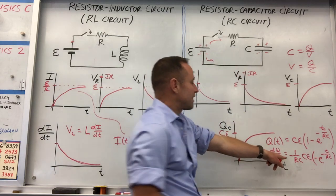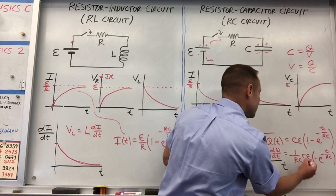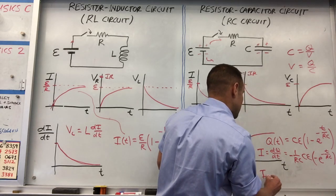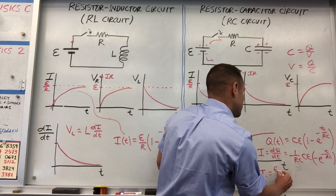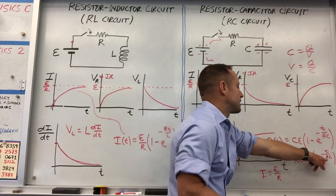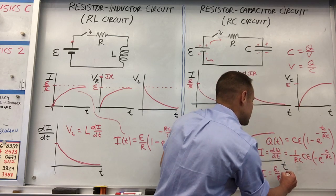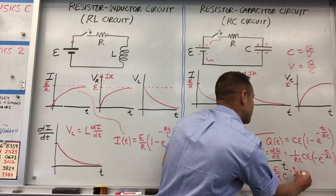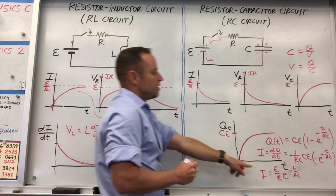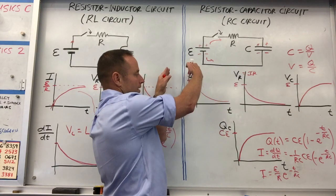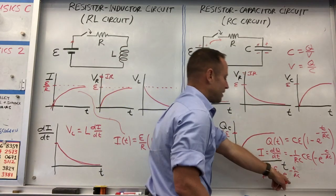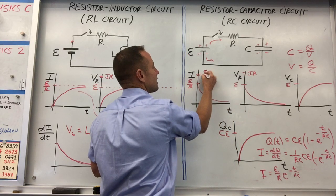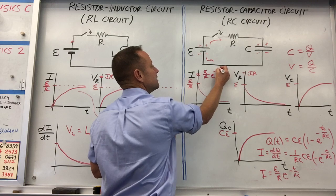Simplifying, the C's cancel and the negative signs cancel. So the current is I(t) = (ε/R)e^(−t/RC). This makes sense — you start at epsilon over R and taper down with the exponential factor e^(−t/RC).